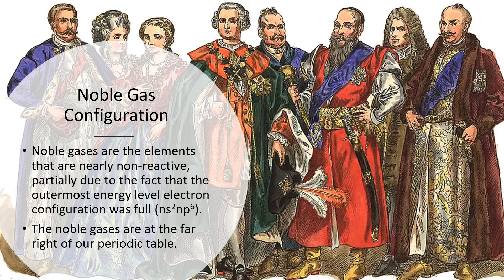So noble gas configuration. Why are the noble gases called noble gases? Just think about the royals—they don't want to deal with the peasants, they just want to be left alone because they're rich and fat and all that type of stuff. So noble gases, they're elements that are nearly non-reactive, partially due to the fact that their outermost shell, their valence shell is full. The noble gases are at the far right of our periodic table.